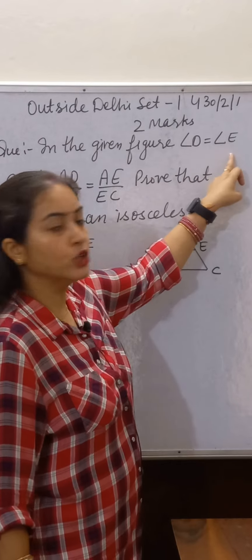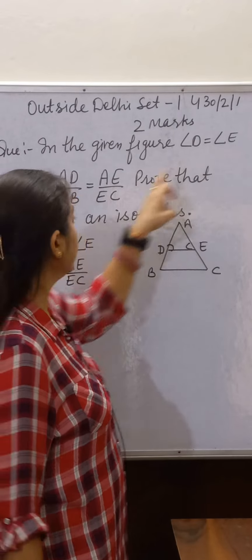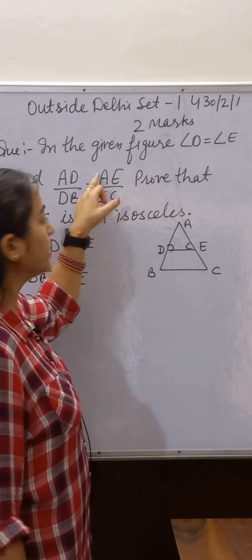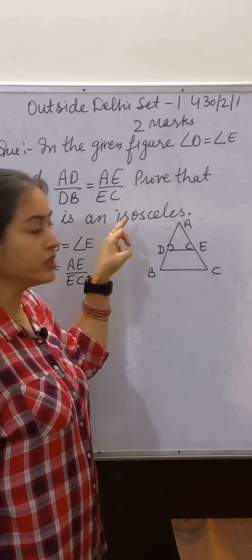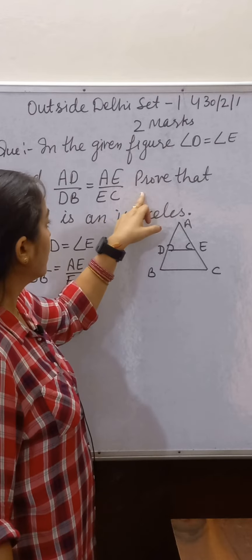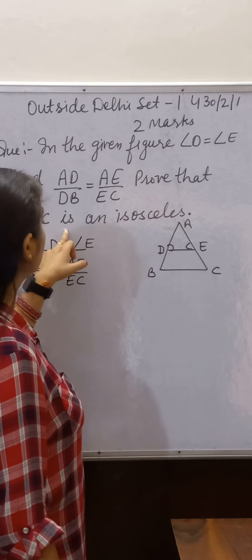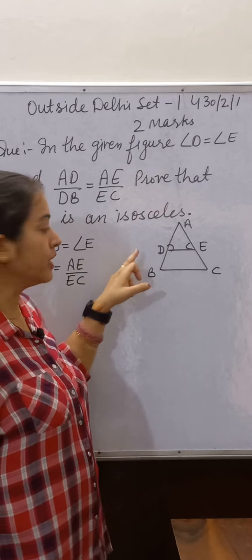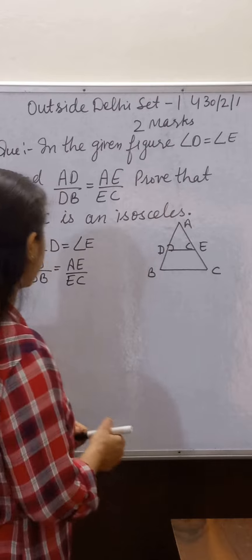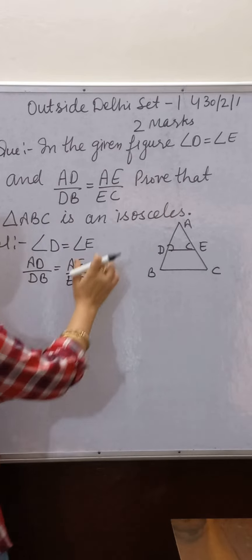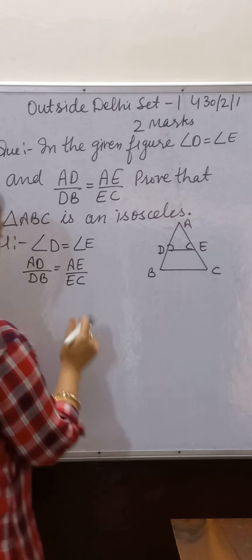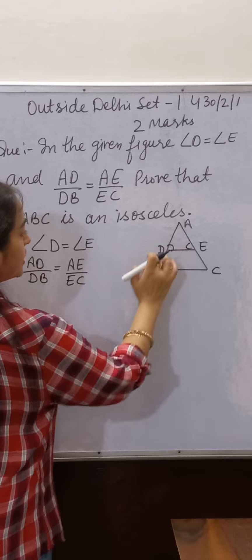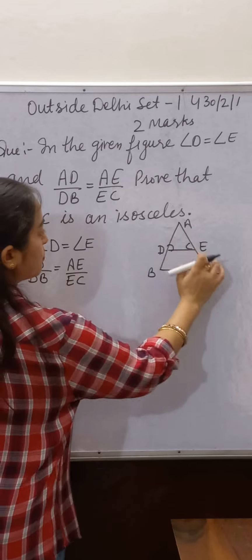In the given figure, angle D is equal to angle E, and AD/DB = AE/EC. We have to prove that triangle ABC is an isosceles triangle. First of all, we write the given parts.